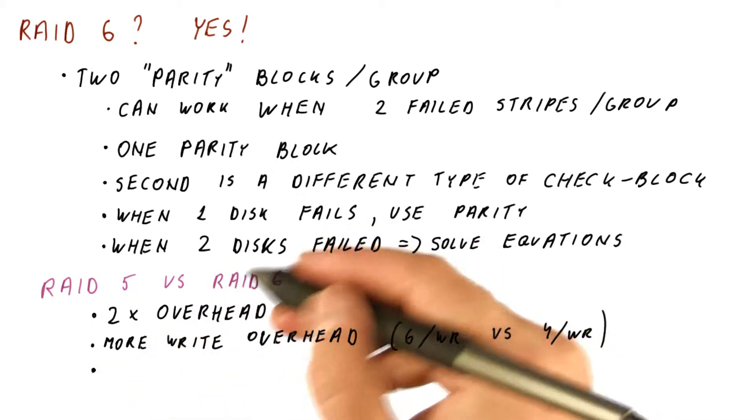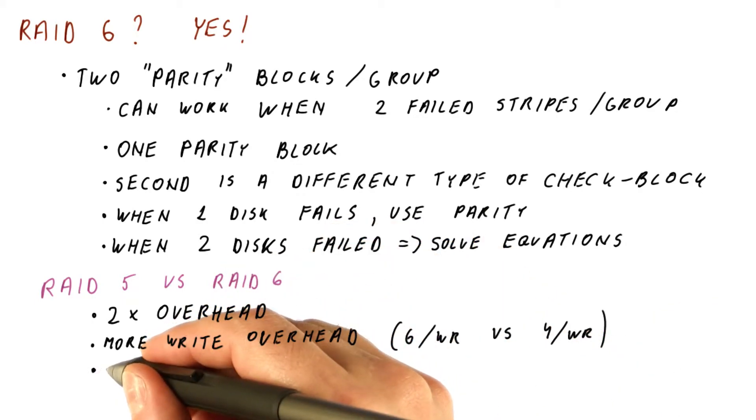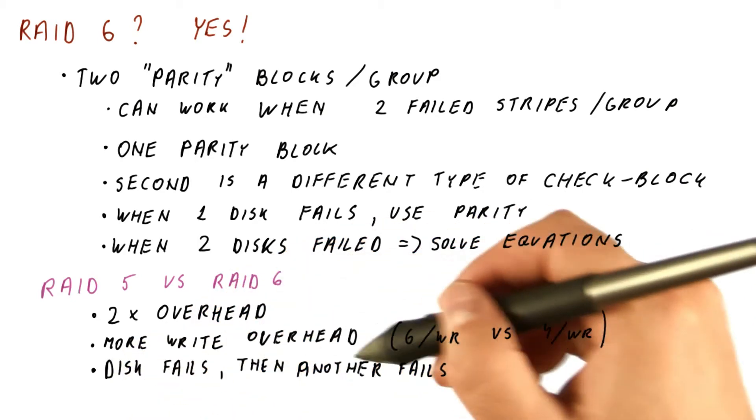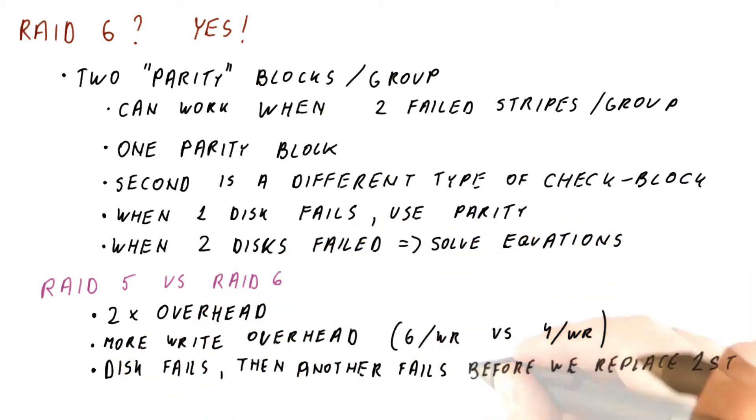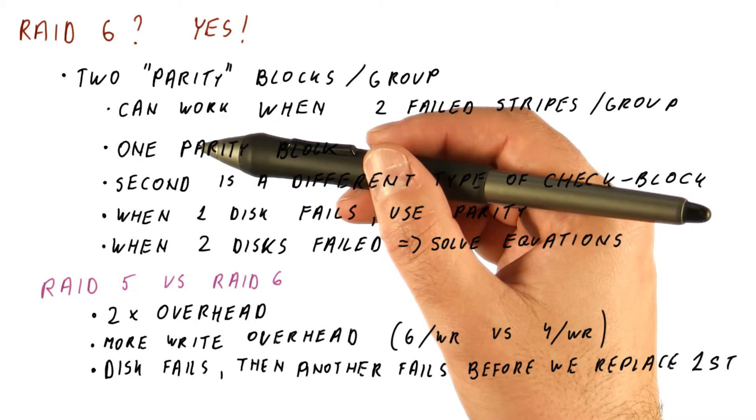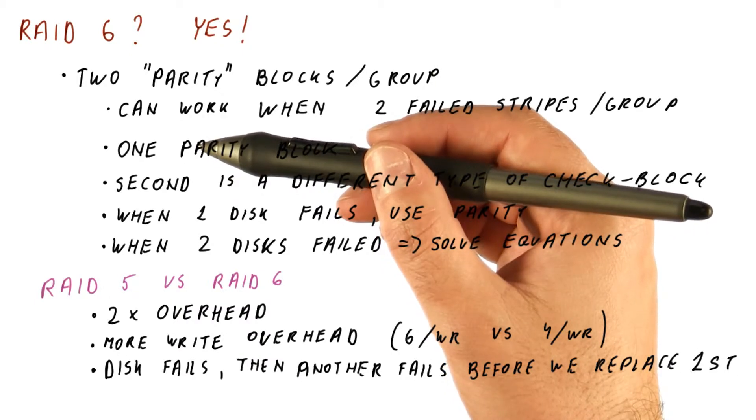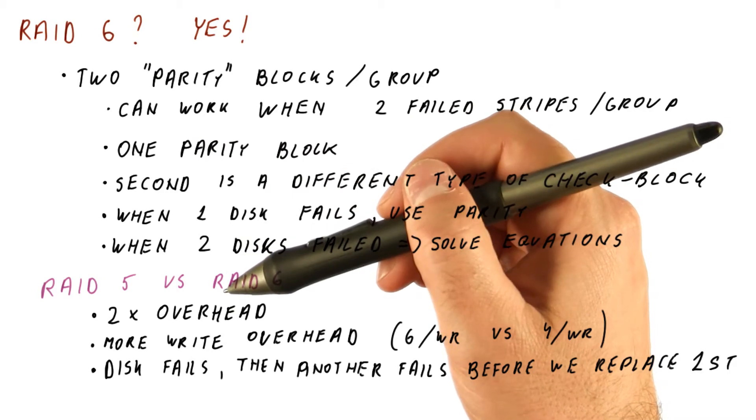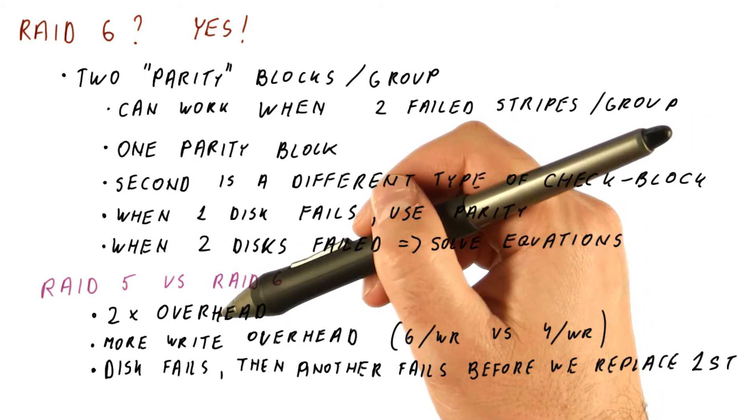So the only reason for having RAID 6 is if there is a good chance of when a disk fails, another one failing before we manage to replace the first failed drive. So note that in any of the RAID configurations, once your disk fails, you don't keep going and ignore the failed drive. You keep going, but you order a replacement or get a replacement and install it so that the RAID array can reestablish itself.